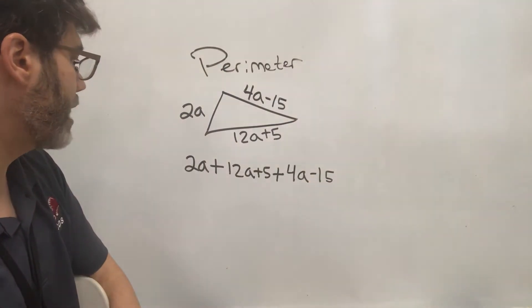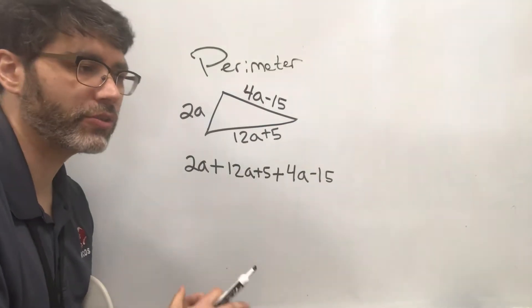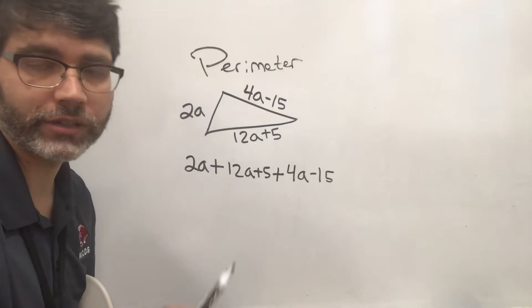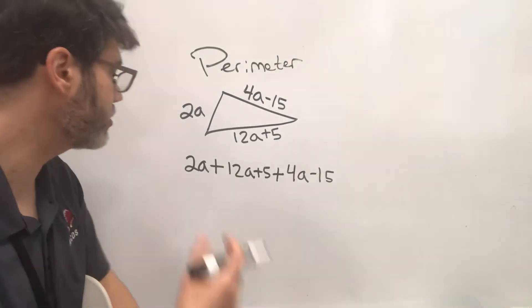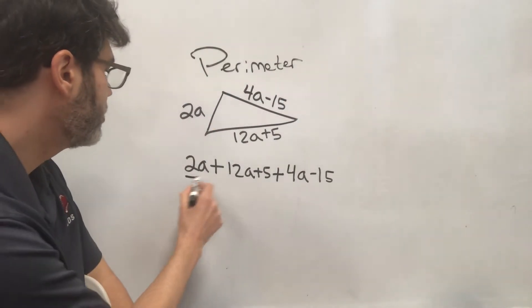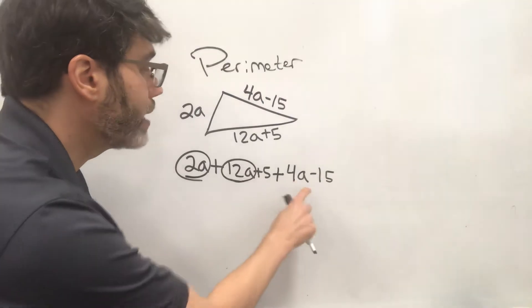So let's say it's 2a plus 12a plus 5 plus the third side 4a minus 15. Okay, so let's gather all of our a's together. And it doesn't matter if you do the a's first or another variable first or a constant first.